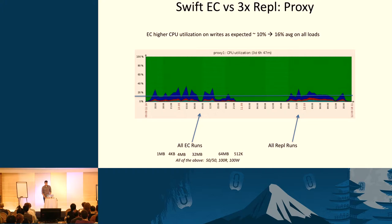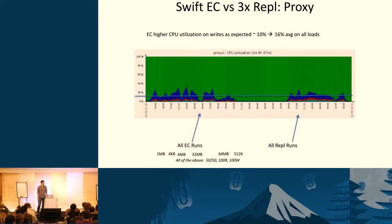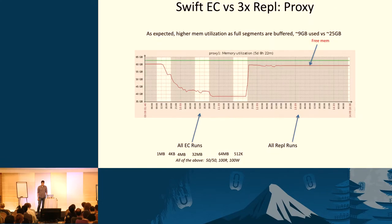Now let's look at CPU utilization. This was a big one with a lot of speculation early on — how much CPU are we going to be eating doing erasure code? It's complex math; there is no math in replication. Here's the picture: all of the EC runs in this piece of time, same series of sizes, then all the replication runs a couple hours later. This is CPU utilization at one of the proxies — both are basically the same, pretty evenly balanced. Across the board, the average went up from about 10% to 16% utilization — not significant. Worthy to note, there are quite a few more peaks in the EC side than on the replication side, so much smoother CPU utilization for replication. But overall, not a huge tax on the system.